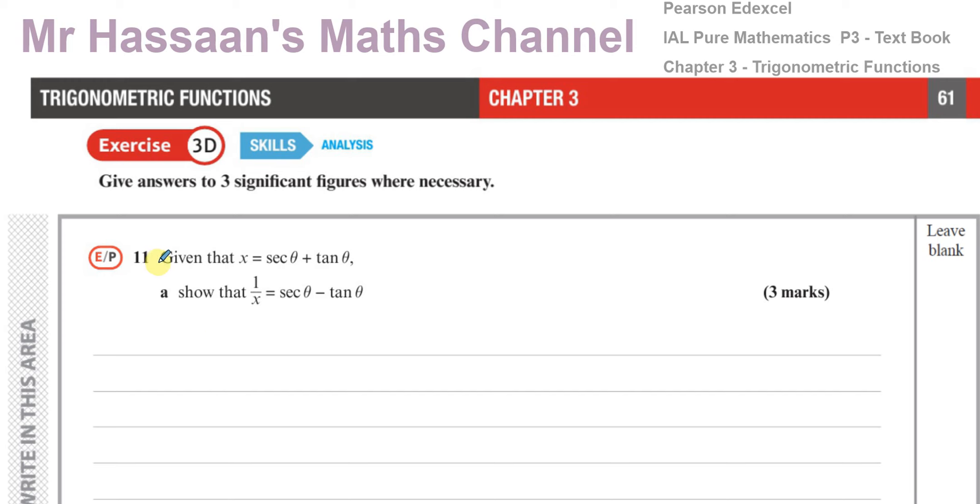Here we have a question. It says, Given that x equals secant θ plus tan θ, show that 1 over x equals secant θ minus tan θ. Now, this question actually is a bit of a complicated one. If you try to do it the normal type of way, you're going to sometimes go around in circles. I did it a few times by trying to change this into 1 over cosine θ and this into sine θ over cosine θ and then ended up going in circles.